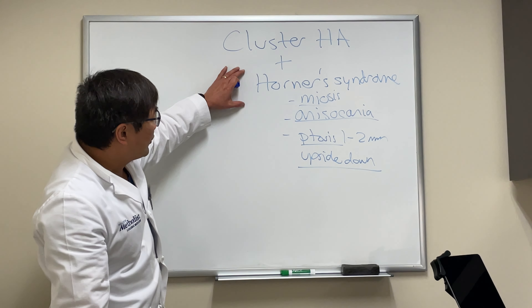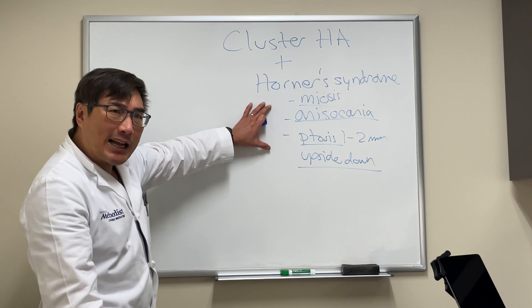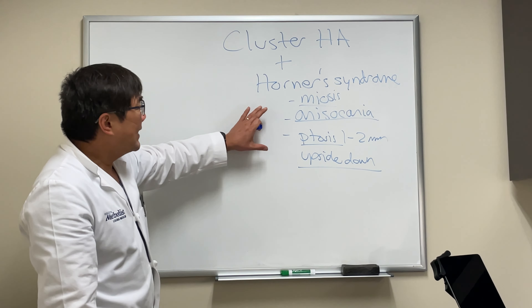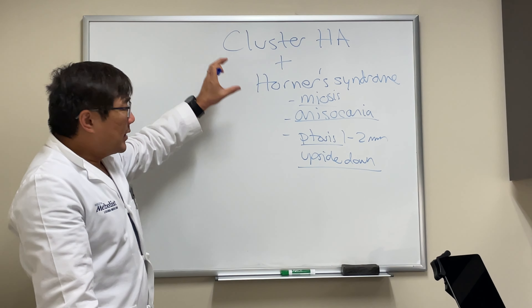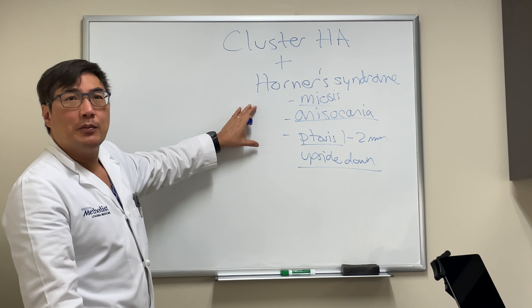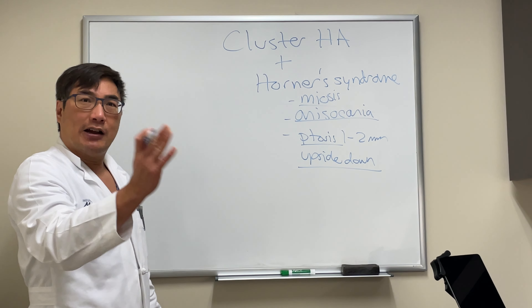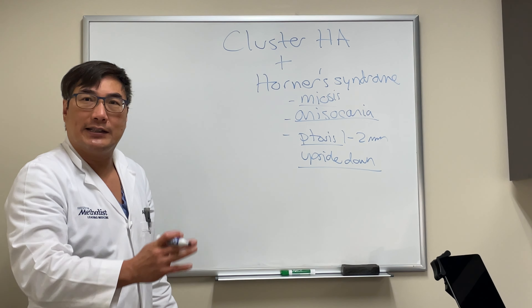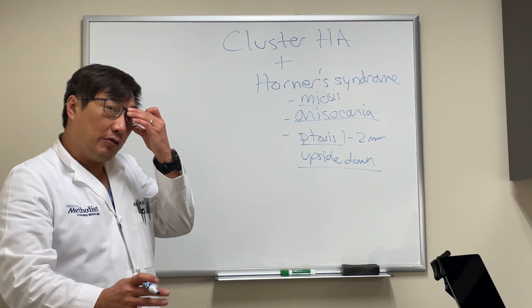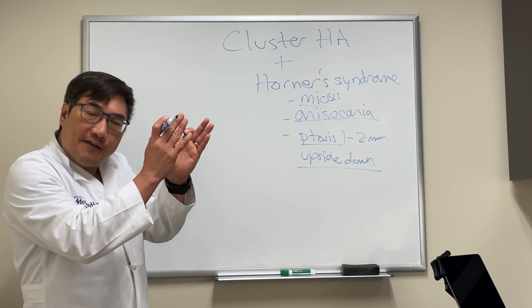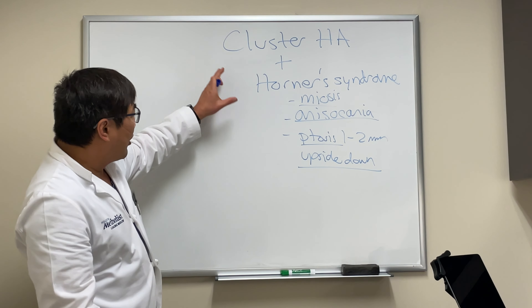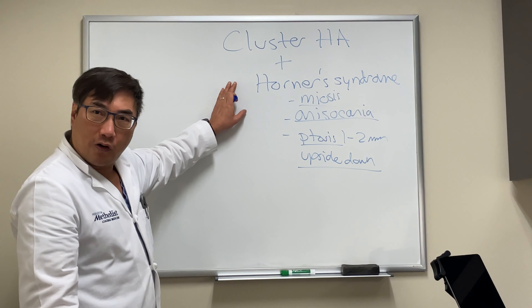When you have a Horner syndrome that is an oculosympathetic defect, that oculosympathetic defect is associated with the autonomic headache syndrome called cluster. The mechanism is presumably because the autonomics to the eye are surrounding the internal carotid artery, and so that vascular headache can cause a Horner syndrome.